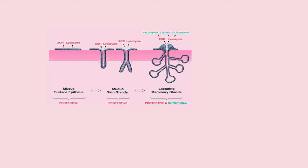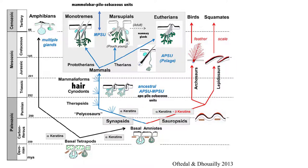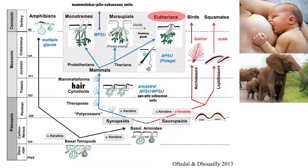Now let's look at that more carefully in terms of a phylogenetic tree. On the left is time, starting 359 million years ago with basal tetrapods — ancient four-legged creatures. On the left they evolve into amphibians. On the right they evolve into the blue, which are the mammals, and the red, which are the reptiles, birds, and squamates — lizards and snakes. There are three types of mammals: monotremes, marsupials, and eutherians, which are the placental mammals. Here are two placental mammals nursing, and notice that elephants also have two nipples in the front.